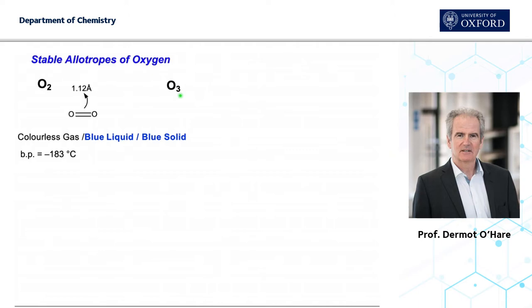Oxygen gas is colorless. It condenses at low temperature to form a blue liquid and then at much lower temperatures to a blue solid at atmospheric pressure. Nitrogen boils 13 degrees lower than oxygen, and therefore we can conveniently use liquid nitrogen to prepare liquid oxygen by condensing the pure gas.